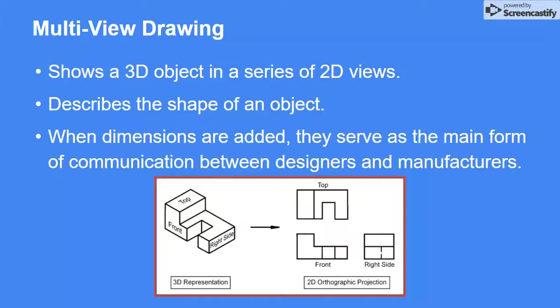Orthographic drawings show a three-dimensional object in a series of two-dimensional drawing views. This is a very accurate way of showing the different features of a design, since 3D drawing views tend to look at the object from an angle, which skews the edges and surfaces of the object.